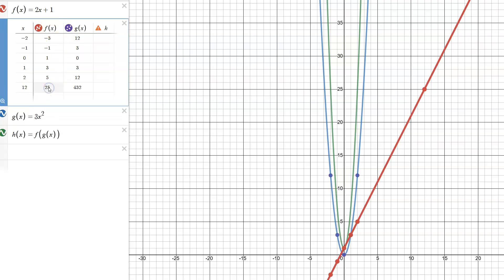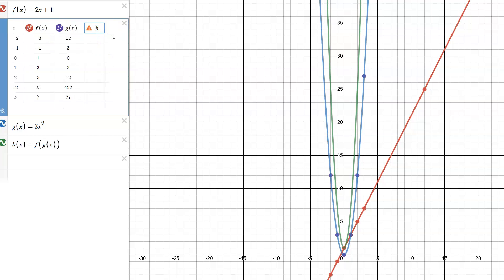For a value like negative 2, we're taking g of negative 2 is 12, that 12 feeds into f, so I'm looking for f's value when its input is 12 which is 25, and that takes us where we were. Similarly for x equals negative 1, h of negative 1 should be, well g of negative 1 goes first, so that gets us mapped to 3.